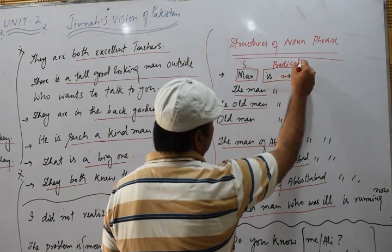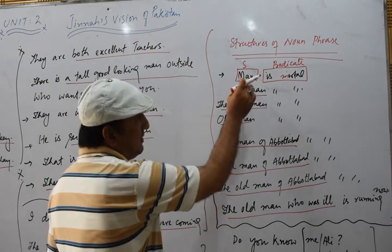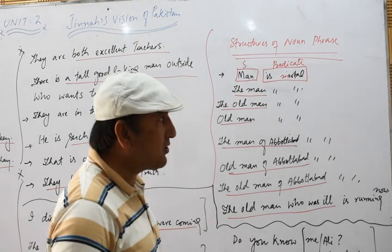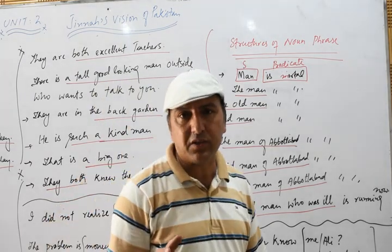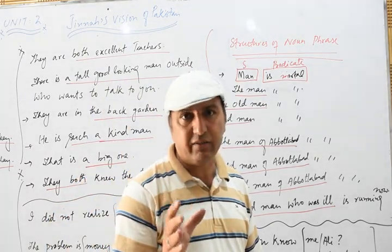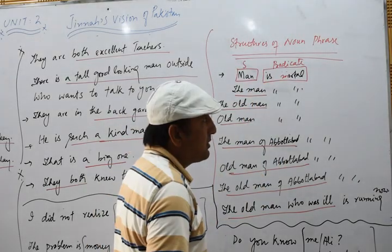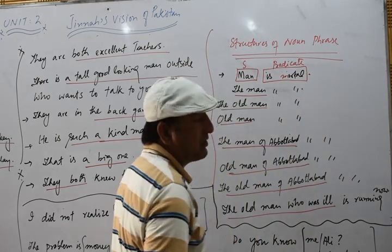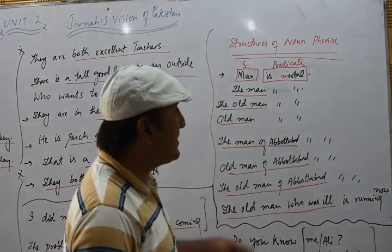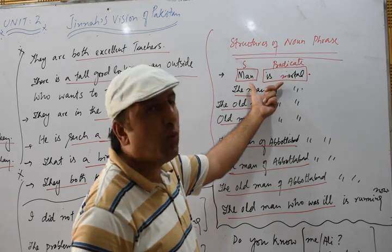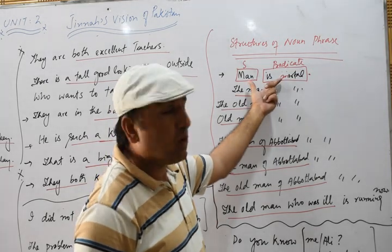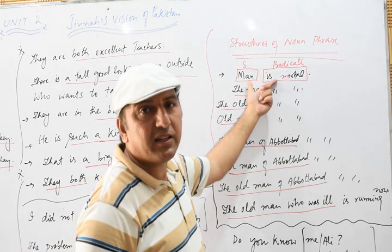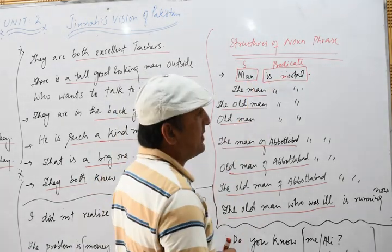This is subject and predicate — combined, we call it a clause, because the definition of a clause is any group of words having subject and predicate. It is a clause, but it is also a sentence because it gives complete meaning. So this is a sentence which has only one clause — we call it a simple sentence. Any sentence having one clause we call a simple sentence.